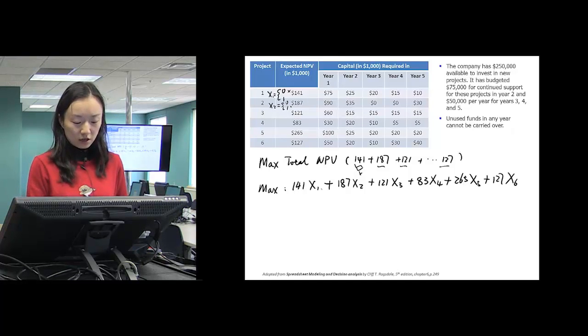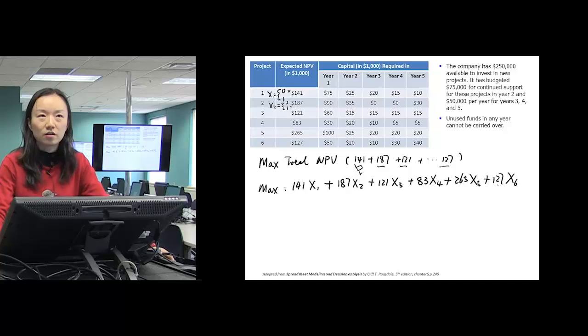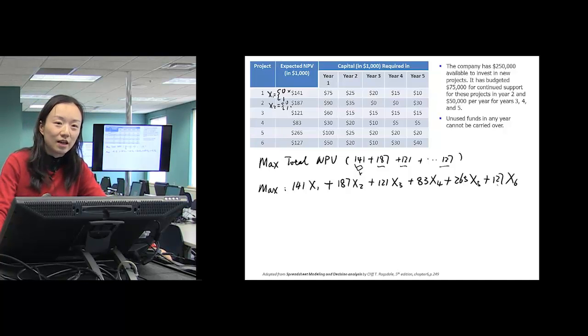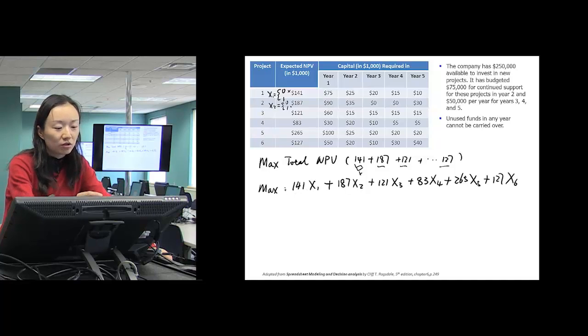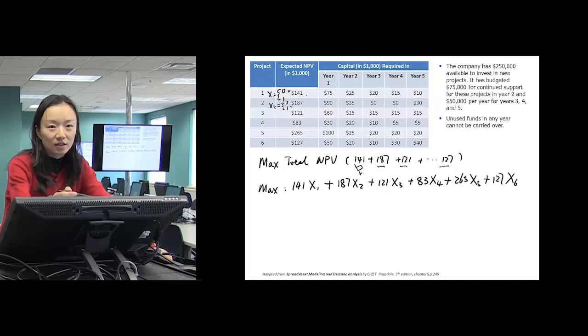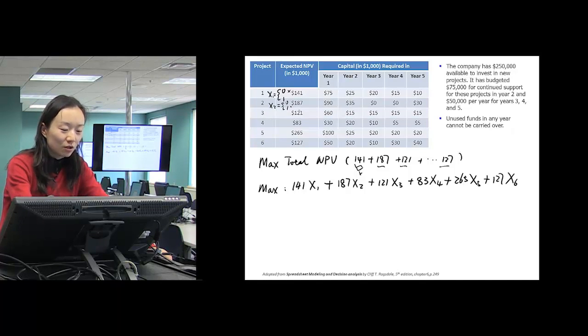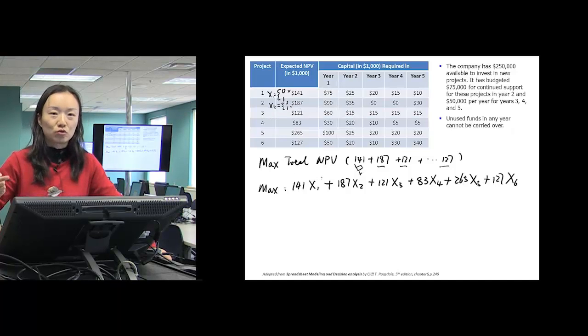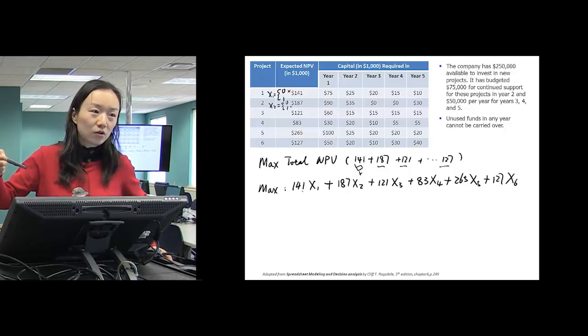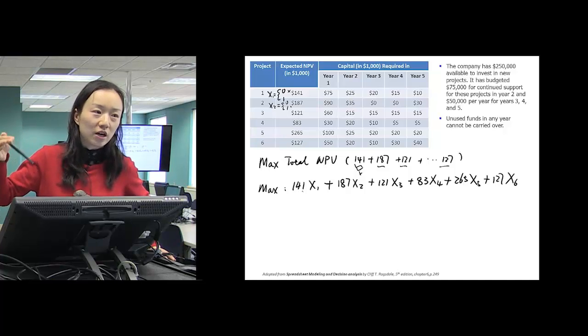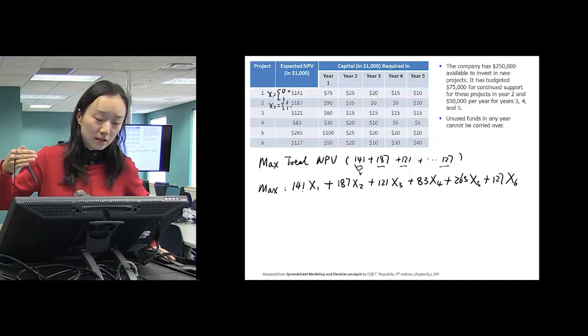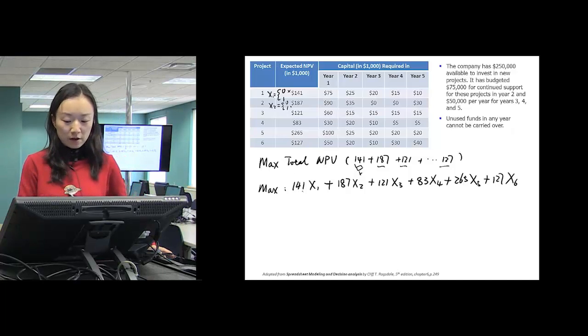So you can see here, we kind of like did a function that should be expressed using an if-then-else, several if-then-else statements. If we don't use this binary variable here, we would say maximize NPV will be if project 1 is chosen, then it's 141 plus if x2 is chosen, then we need to include this one. If x3 is chosen, we need to include this one. Here we use a binary variable to turn the value on or off. If we turn it on, that means x value will be 1, we include it. If we want to turn it off, we don't want to include it, then x value will be 0. So binary variables are very helpful.